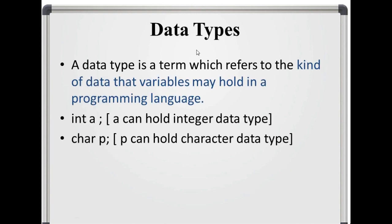Data types. A data type is a term which refers to the kind of data that a variable may hold in a programming language. When you are using different variables in programming for storing values,